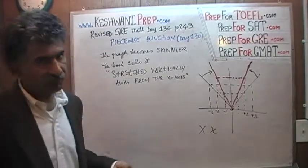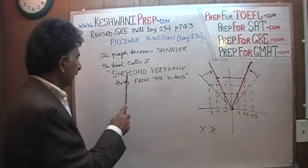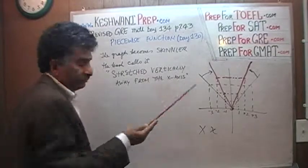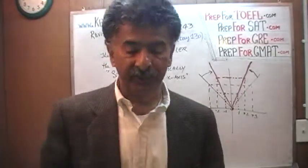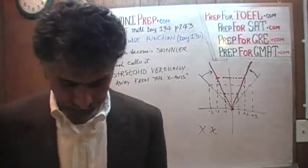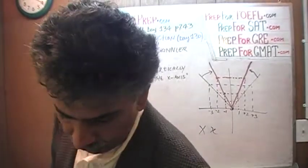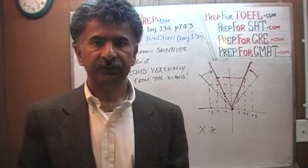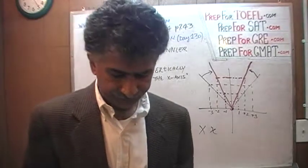Their philosophy is very straightforward — why use one word when you can use half a dozen? That is a very euphemistic way of saying the graph is skinnier.